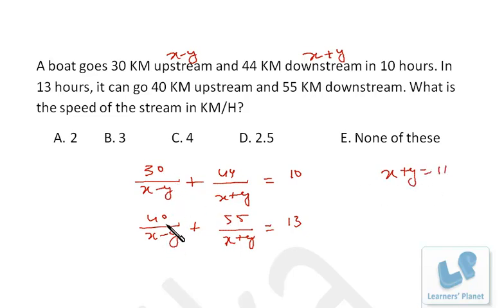It may be 5, may be 10. X minus y may be 5, may be 10. But if I put x plus y as 11 over here, I'll be getting 4. So 30 upon x minus y will be 6. In that case, x minus y has to be 5.